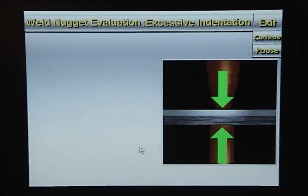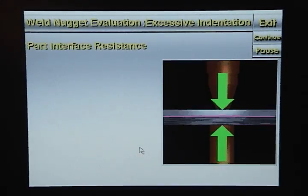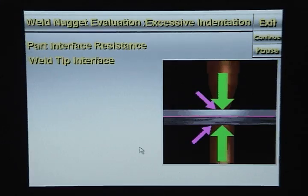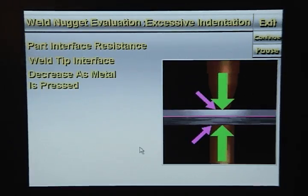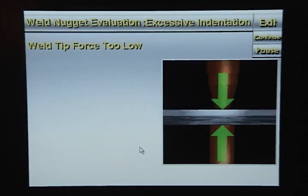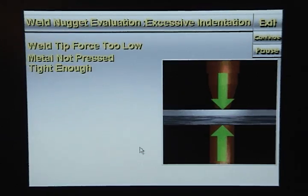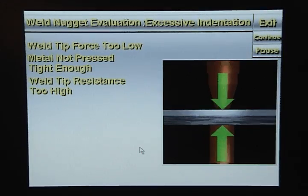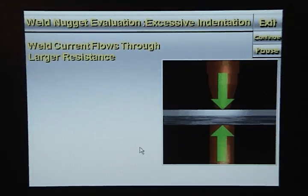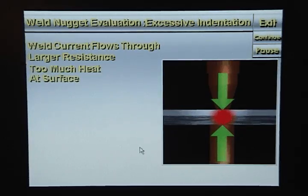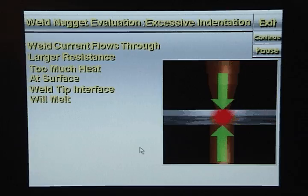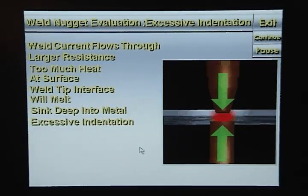The metal stack-up is pressed together by the weld tips, and the part interface resistance and weld tip interface resistance decrease as the metal is pressed tighter together. If the weld tip force is too low, the metal will not be pressed tight enough and the weld tip interface resistance will be too high. As weld current flows through the larger resistance, too much heat will be generated at the surface, the weld tip interface will melt, and the weld tips will sink deep into the metal, creating excessive indentation.